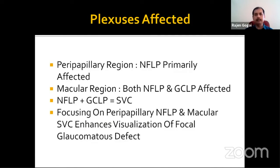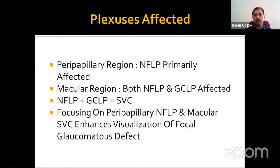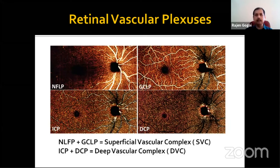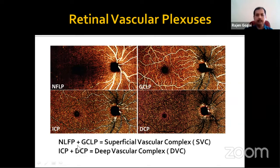What plexuses are affected in glaucoma? In the peripapillary region, it is the nerve fiber layer plexus which is primarily affected. In the macular region, both the nerve fiber layer plexus and the ganglion cell layer plexus are affected. These two plexuses combined are called the superficial vascular complex. Focusing on the superficial vascular complex enhances visualization of focal glaucomatous defects. The ICP and DCP combine to form the deep vascular complex.